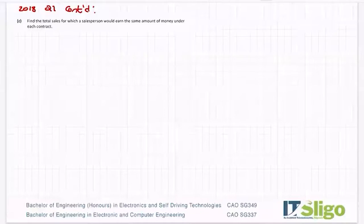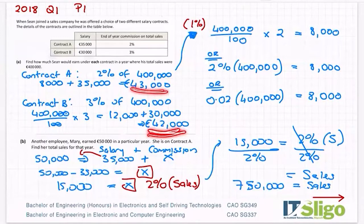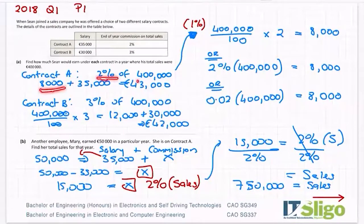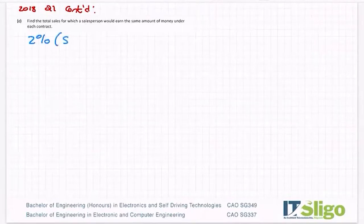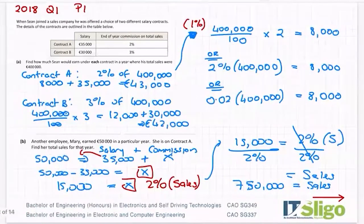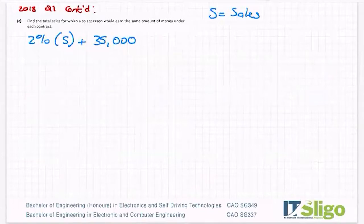Part C then, find the total sales for which a salesperson would earn the same amount of money under each contract. When are wages the same? Well, we know for sales of 400,000 that wages are not the same. We have 43 and 42, but they're close. So how did I get that 43,000? Well, I took my commission, which was 2% of S, and I added the 35,000 to it. So that's how I got my wages or salary for contract A. For contract B then, I got 3% of S and I added 30,000 to it. So the question is asking, when are they the same?